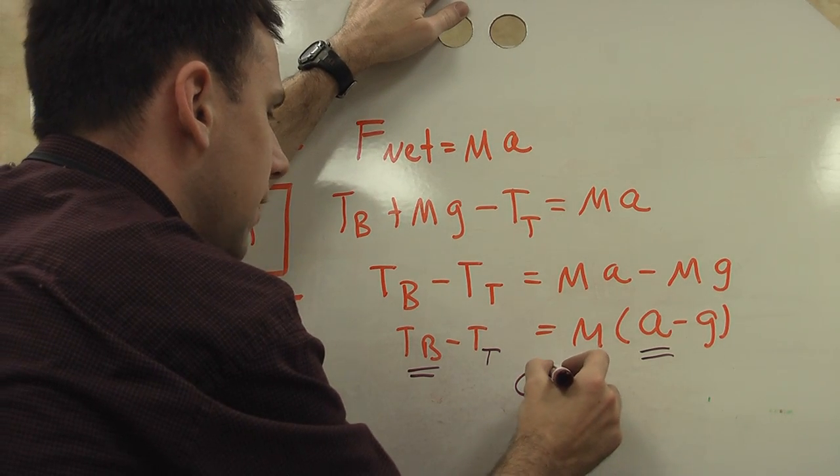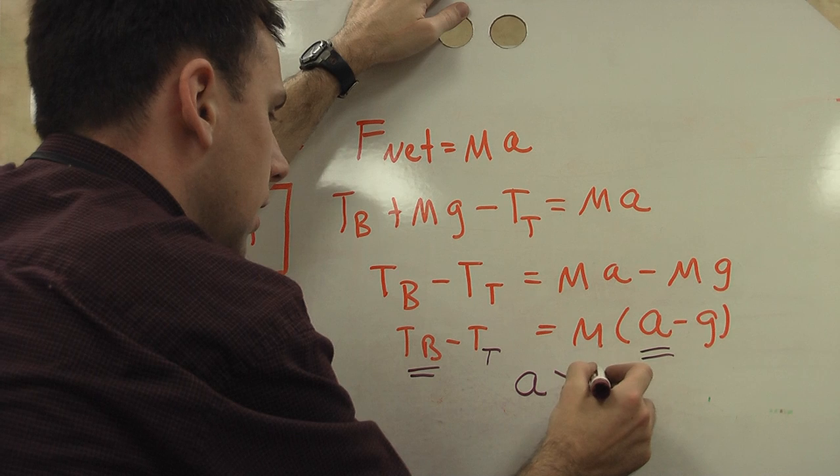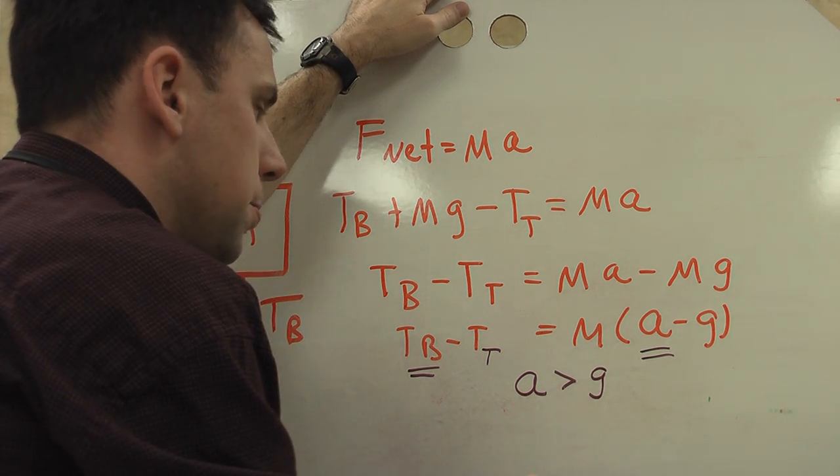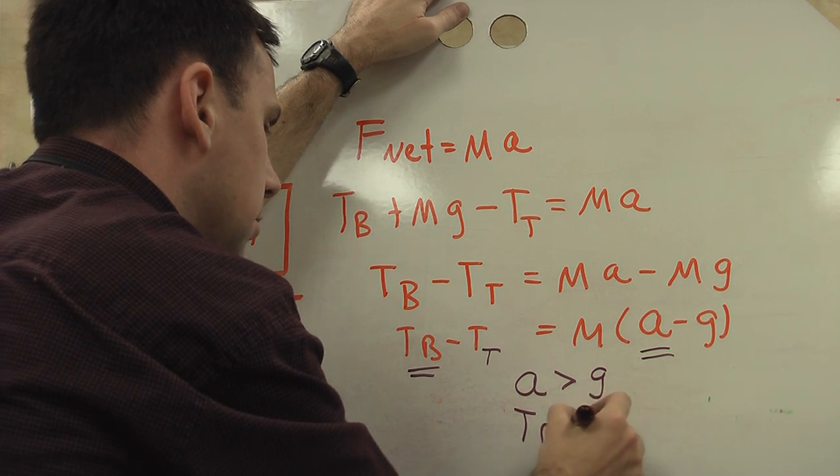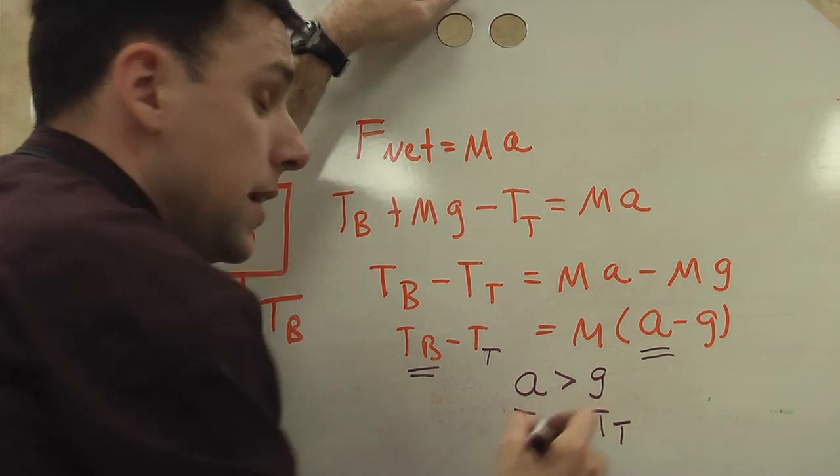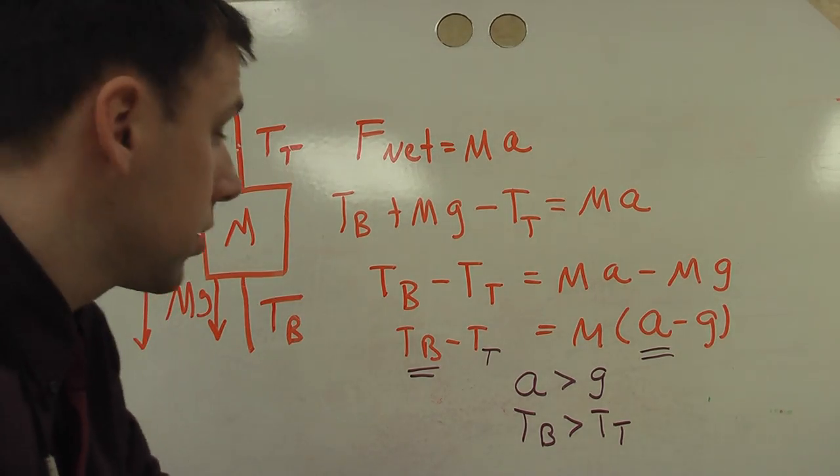Well, that's also going to mean that the tension at the bottom is greater than the tension at the top. So if the acceleration I try to give it is greater than 9.8 meters per second squared, well, then the bottom tension is greater than the top tension, which means you're more likely to break the bottom string than you are to break the top string.